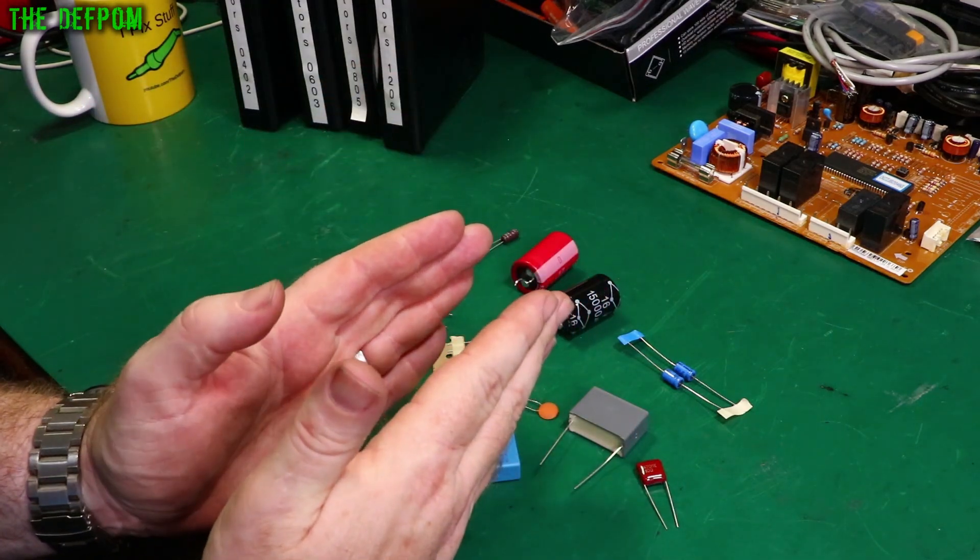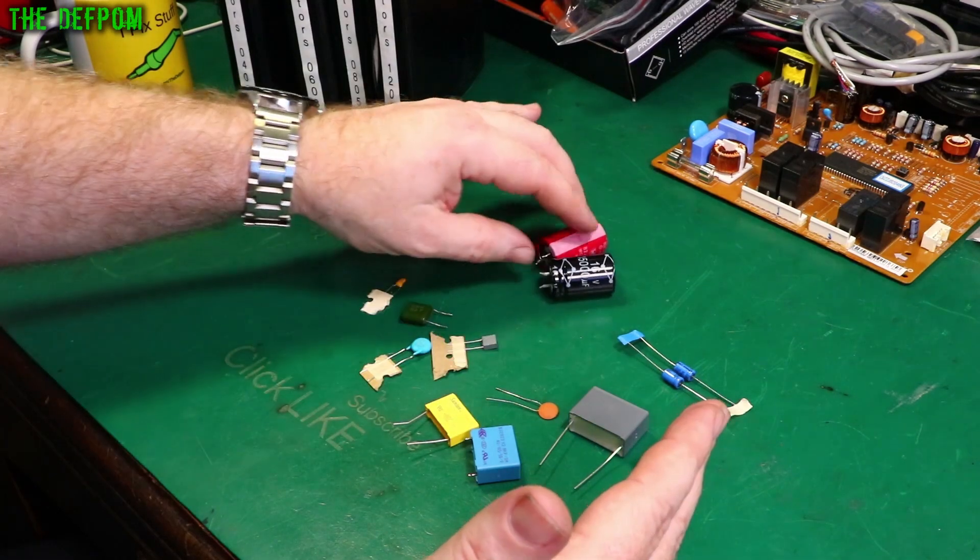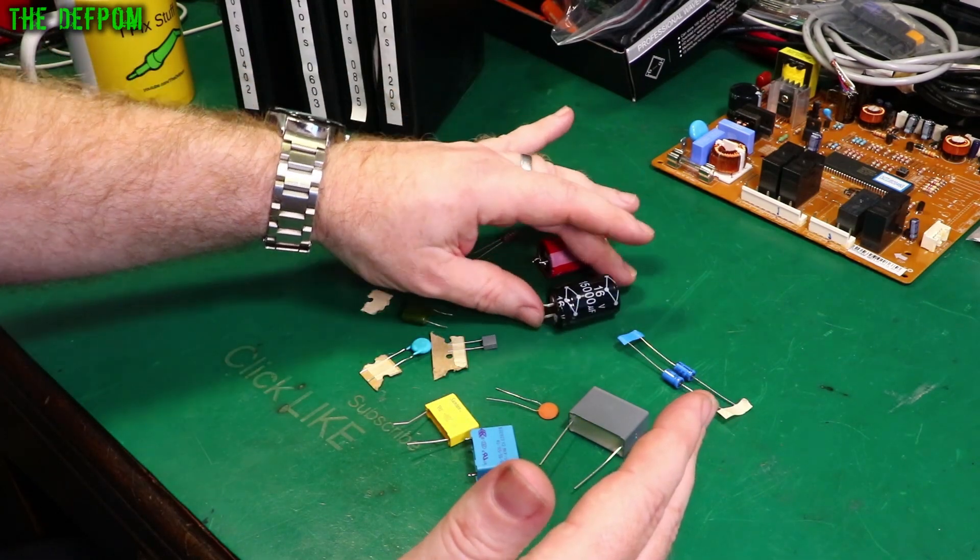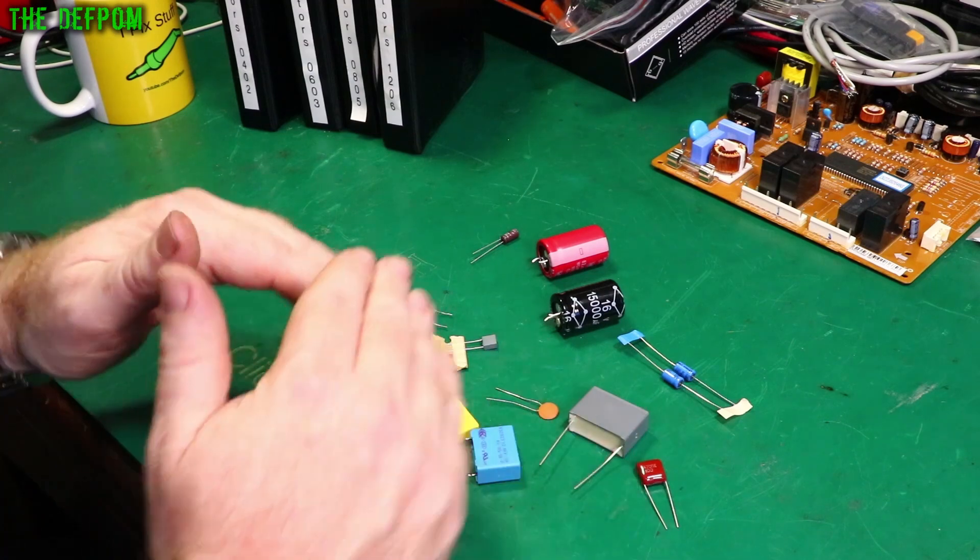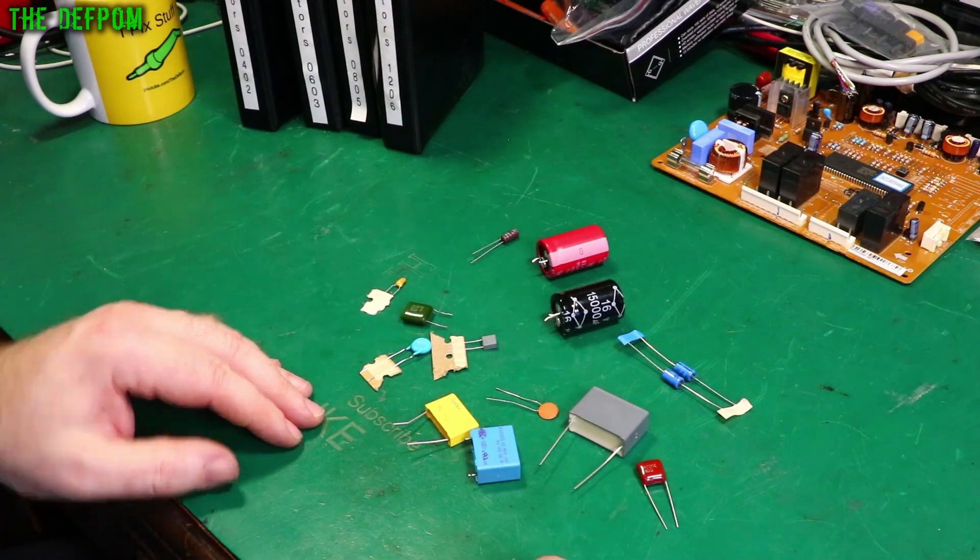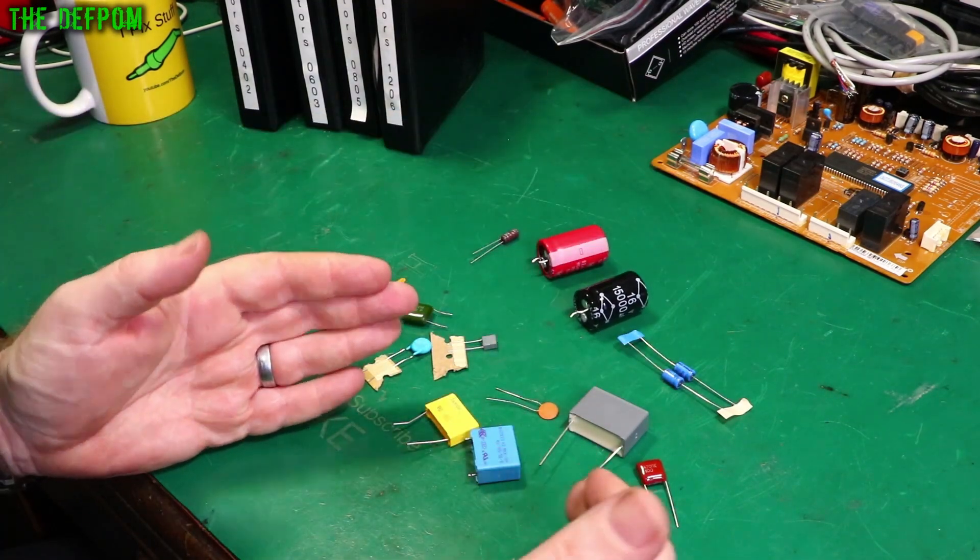Capacitors can be used in different ways. Some are to store charge, like in these, to store some energy and then release it again. In AC to DC converters and that sort of stuff, where they're actually smoothing out the ripple from AC line. These store it and release it. Other times you're using them for filtering.